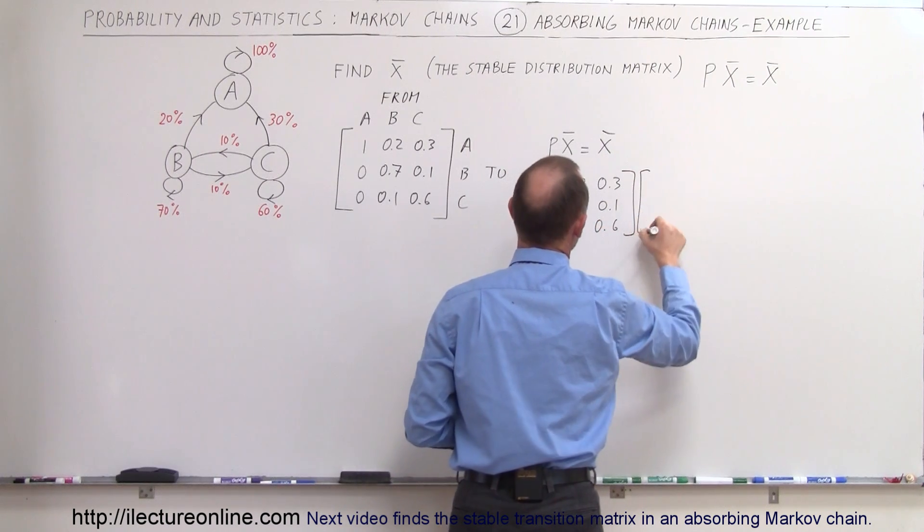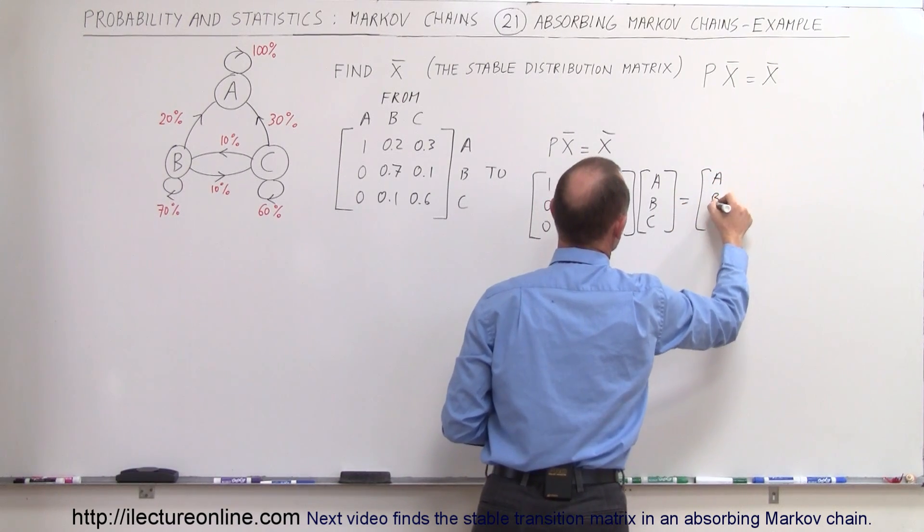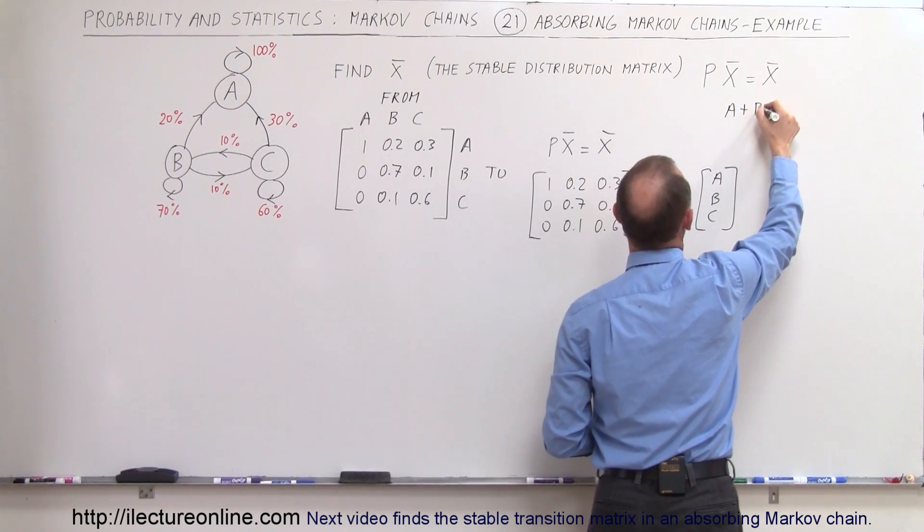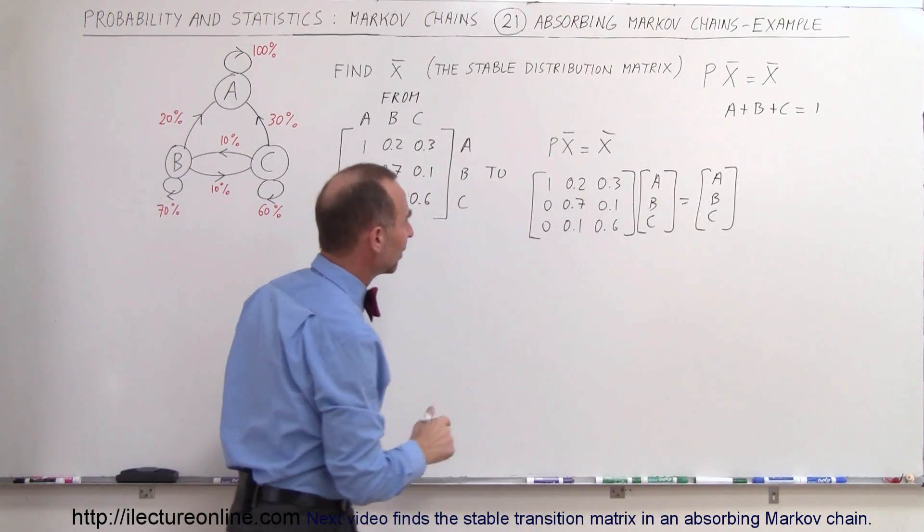We multiply that times A, B, and C, so we should get A, B, and C back. Also, of course, know that A plus B plus C must equal 1. Alright, so let's use our traditional technique and see what we get.